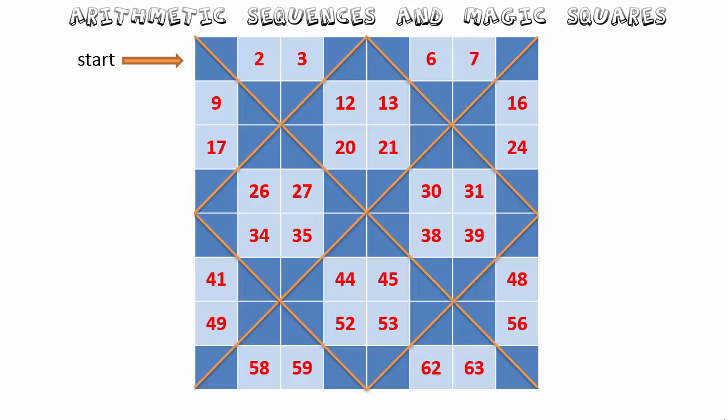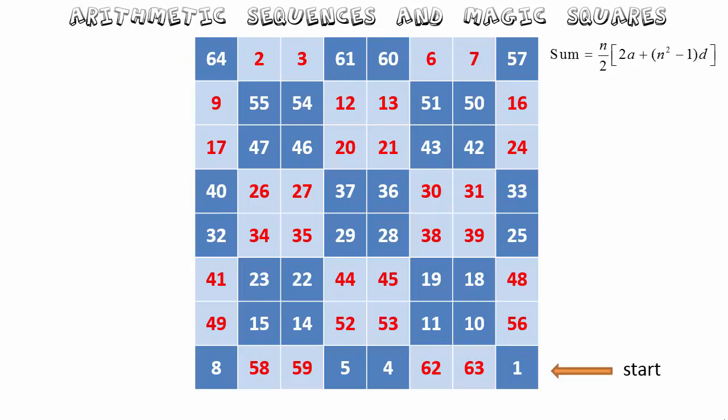For the eight by eight magic square, we first place diagonal lines on the leading diagonals, and also within every four by four sub-square — treating each four by four block as a separate magic square and marking its diagonals too. This gives an interesting checkered effect. Beginning at the top left and going left to right then down produces the numbers shown in red. Then, starting from the bottom right and working upward fills in the remaining numbers. With n equals eight, a equals one and d equals one, the magic sum is 260.